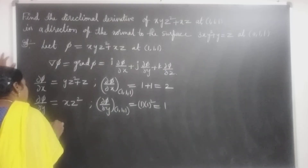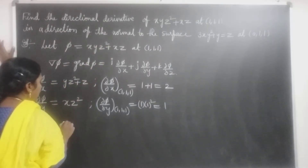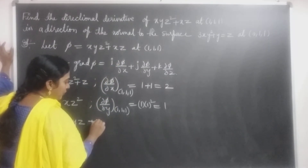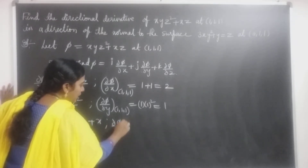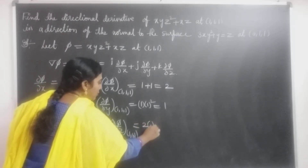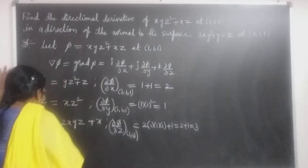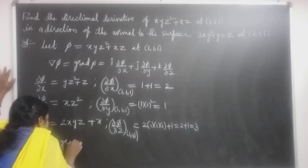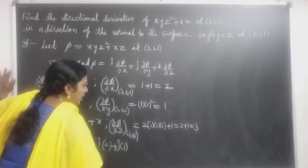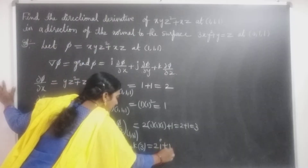Next, ∂φ/∂z: z is the variable, x and y are constants. The derivative of z² is 2z, so the first term gives 2xyz, and the derivative of xz gives x. Thus ∂φ/∂z = 2xyz + x. At the point (1, 1, 1): 2·1·1·1 + 1 = 3. Therefore ∇φ = 2i + j + 3k.